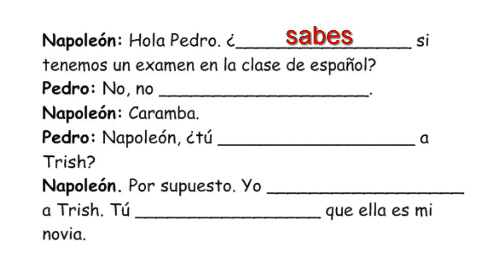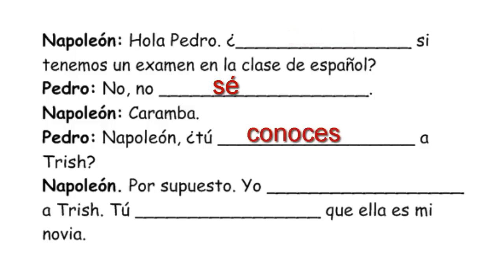It's going to be saber because that's what he asked, but remember saber is irregular in the yo form — we never say 'sabo.' Pedro says 'No, no sé.' Then Napoleon says: 'Caramba, Pedro — tú _____ a Trish?' You know Trish — that's a person, so we use conocer with the personal a. Tú conoces a Trish. Napoleon replies: 'Por supuesto — yo...' and remember conocer is irregular in the yo form.